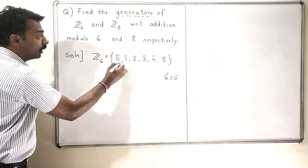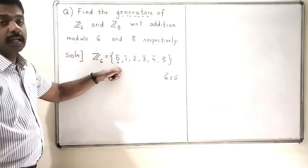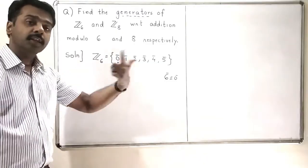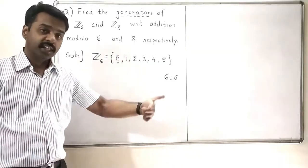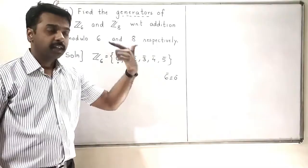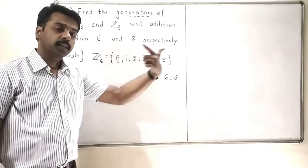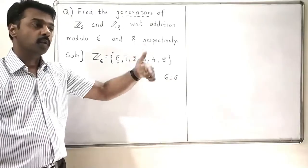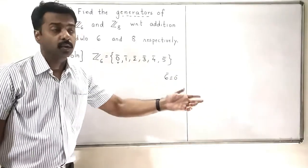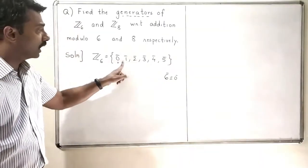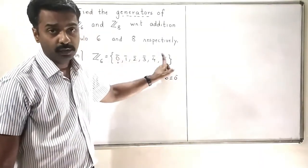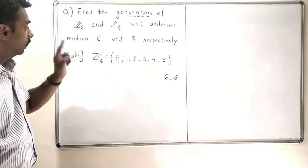Obviously, 0 cannot be the generator of this set because if I add 0 to itself I will always get 0. If I add 0 plus 0 plus 0 I will get 0, and adding more zeros still gives 0. So 0 will not be able to generate all the other elements of this particular set.